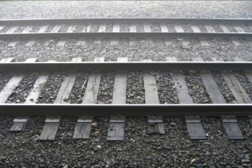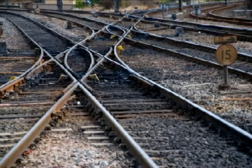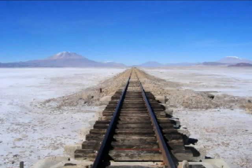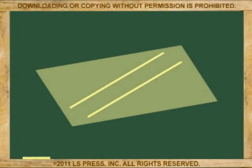These are railroad tracks. Railroad tracks are the best example of parallel lines — lines on the same plane that will never touch. Parallel lines by themselves don't tell us a lot. However, if you cross them with other lines, things begin to happen.